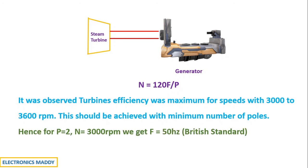With minimum number of poles, say for P is equal to 2 and the speed of 3000 rpm, we get F is equal to 50 Hz according to British standard. And for P is equal to 2, N is equal to 3600 rpm, we get F is equal to 60 Hz according to US standard. This is why we choose 50 Hz or 60 Hz depending upon the country.